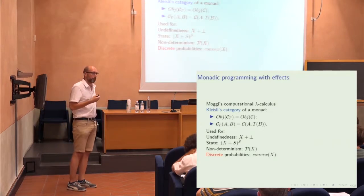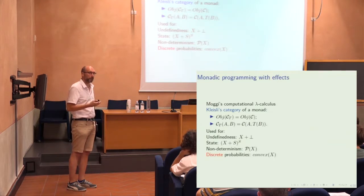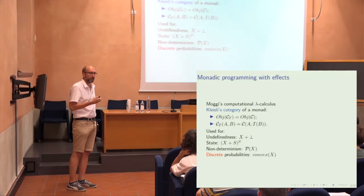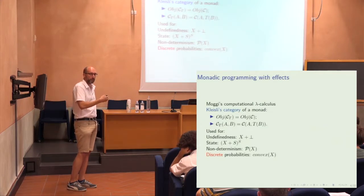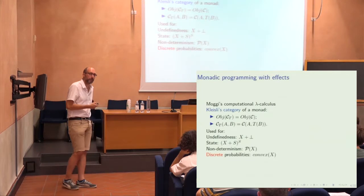There are a number of applications, especially machine learning but also differential privacy, where there's a strong push towards having probabilities over the interval [0,1] or over the real numbers. So you actually want to extend this semantics to one where you have continuous data types.